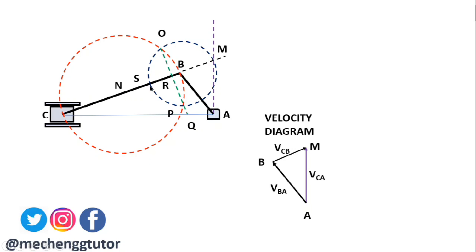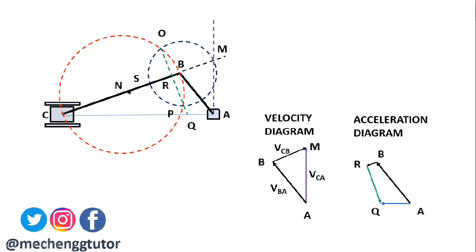The line OQ intersects the connecting rod BC at point R, and the smaller circle intersects BC at point S. We then draw quadrilateral ABRQ. This quadrilateral ABRQ is the acceleration diagram for the slider crank mechanism. AB represents the radial component of acceleration of crank AB; AC represents the acceleration of the slider, which has only a single acceleration component fAC; and RQ represents the tangential acceleration component of connecting rod BC, denoted as ft_CB.